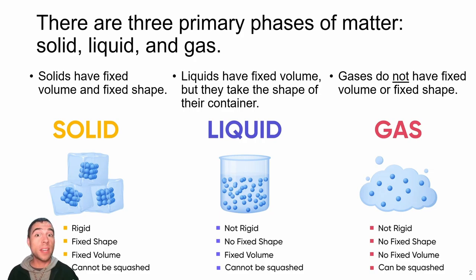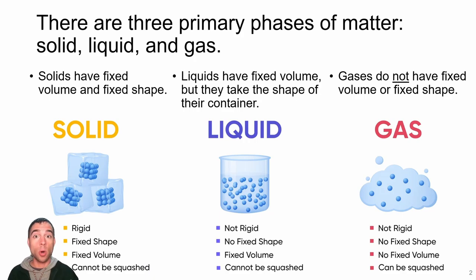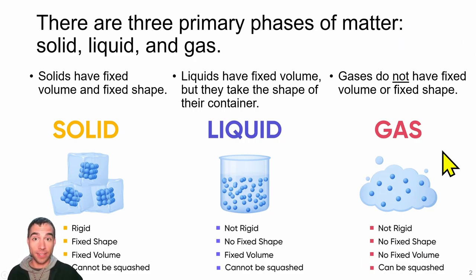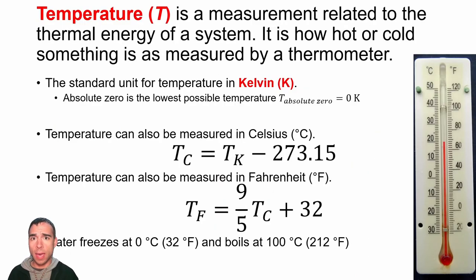Liquids have a fixed volume — we can't compress them, but they take on the shape of whatever container they're in. Gases do not have a fixed shape or a fixed volume, so they will take on the volume and shape of their container. This entire lecture and unit will talk mostly about gases, but first let's cover a few properties that might exist in some system of matter.